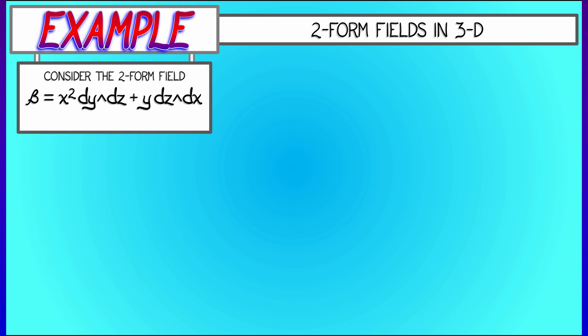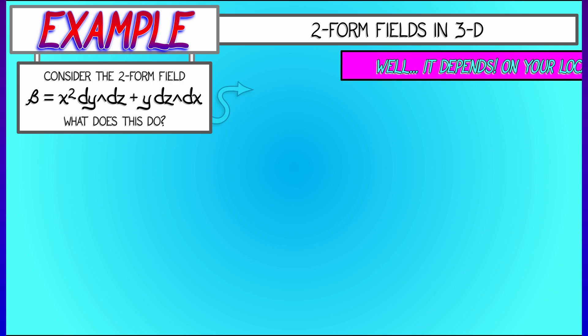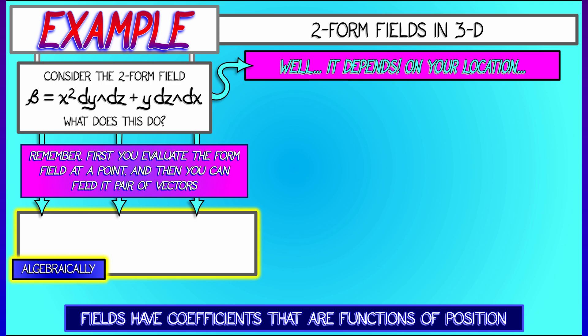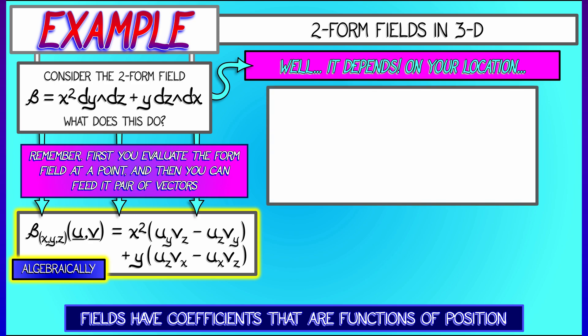Let's see an example where we have a two-form field. Let's say beta is given by x squared dy wedge dz plus y dz wedge dx. Now, what does this guy do? Well, it depends. It depends on location. Remember, you have to evaluate the two-form at a point, and then feed it a pair of vectors. Let's say u and v. In this case, what you get is x squared times u y v z minus u z v y plus y times u z v x minus u x v z.